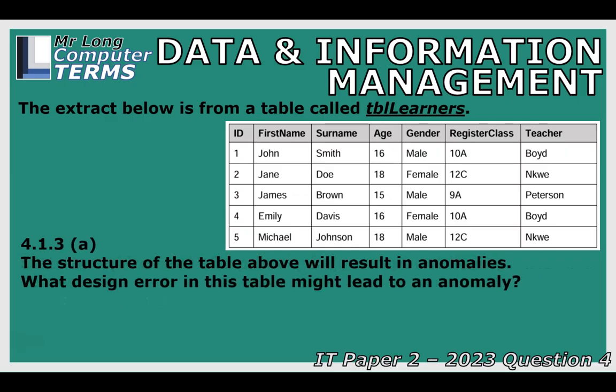Question 4.1.3A states the structure of the table will result in anomalies — meaning data integrity will be lost and data is not organized well. Looking at the register class and teacher fields, every student has a register class and teacher, but the teacher is linked to the register class, not the student. This creates duplicate data: if you delete the only student in a register class, you lose the teacher-class association entirely.